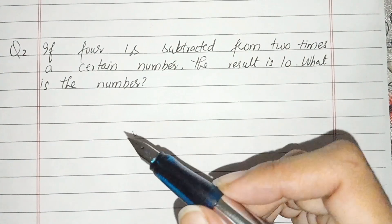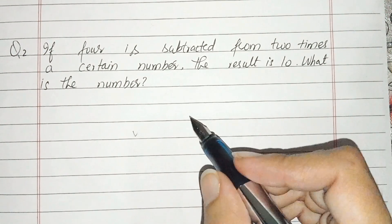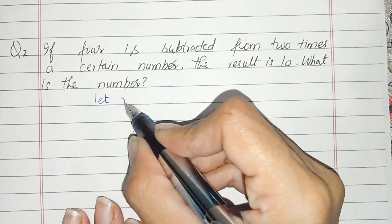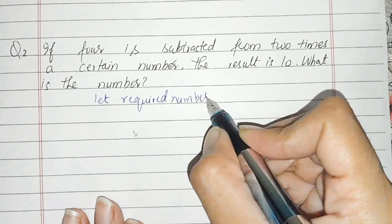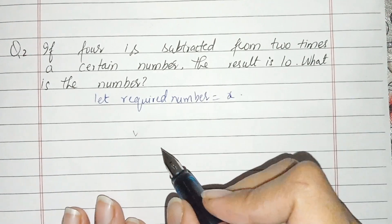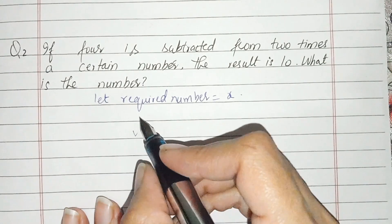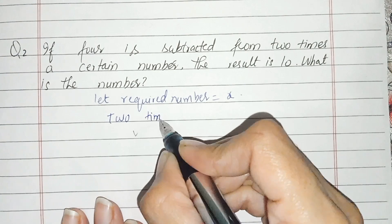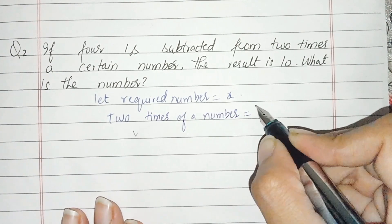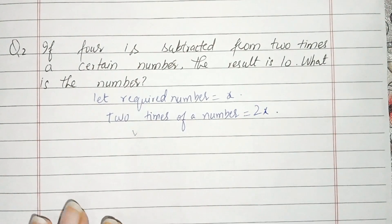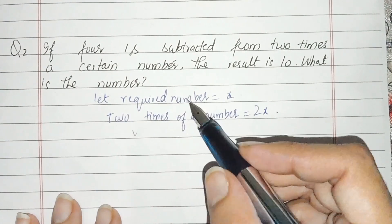Question number 2: If 4 is subtracted from 2 times a certain number, the result is 10. What is the number? Let the required number be x. Here we have 2 times the number, which is 2x. And 4 is subtracted from 2 times a certain number.